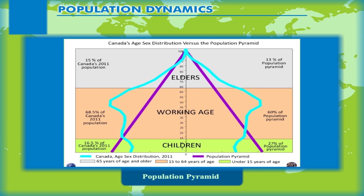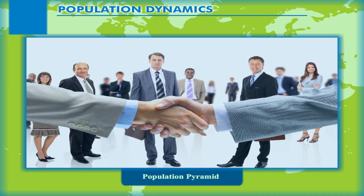There are two groups of dependents: young dependents aged below 15 years and elderly dependents aged above 65 years. Those of the working age are the economically active and contribute to the country's economy.